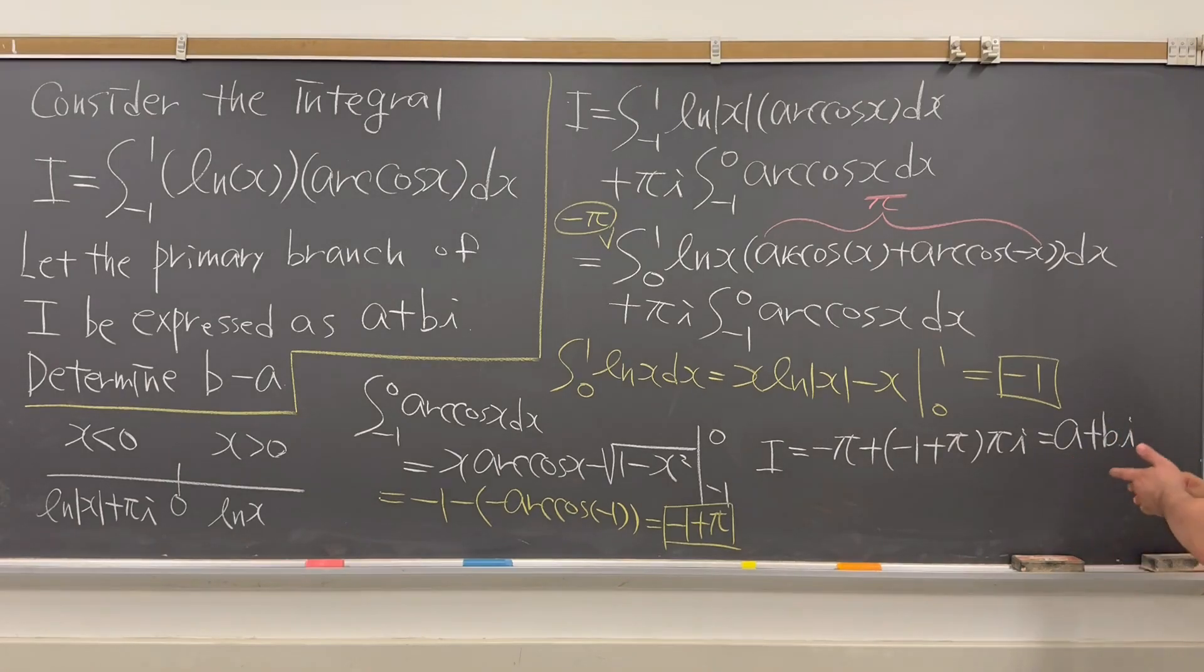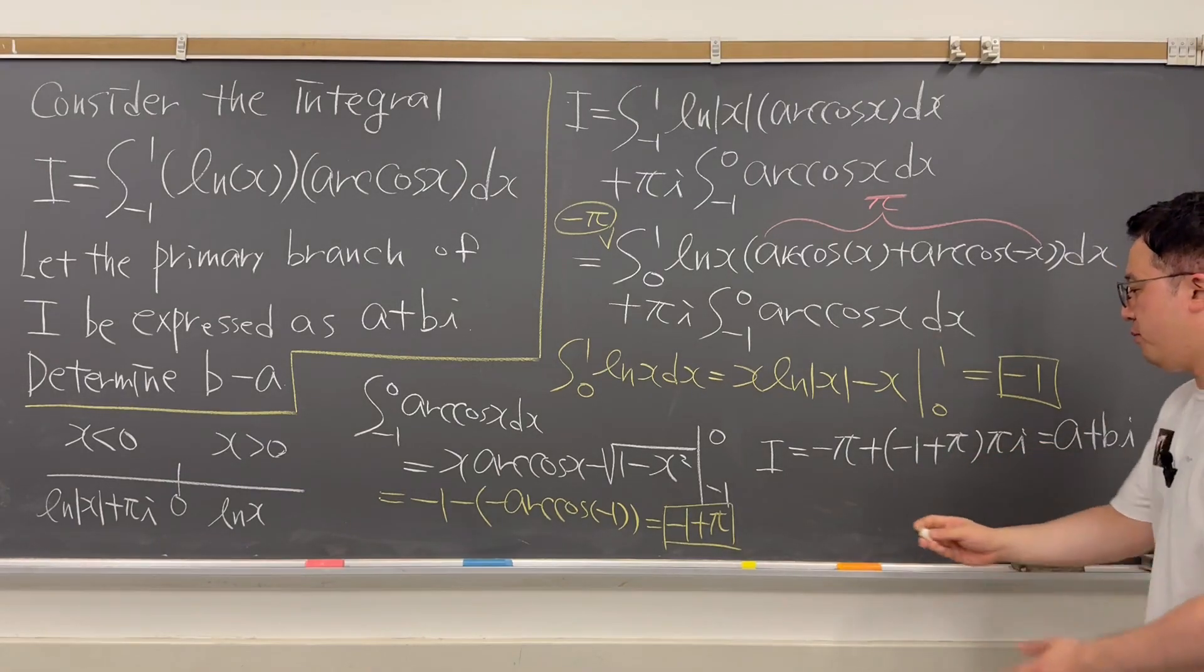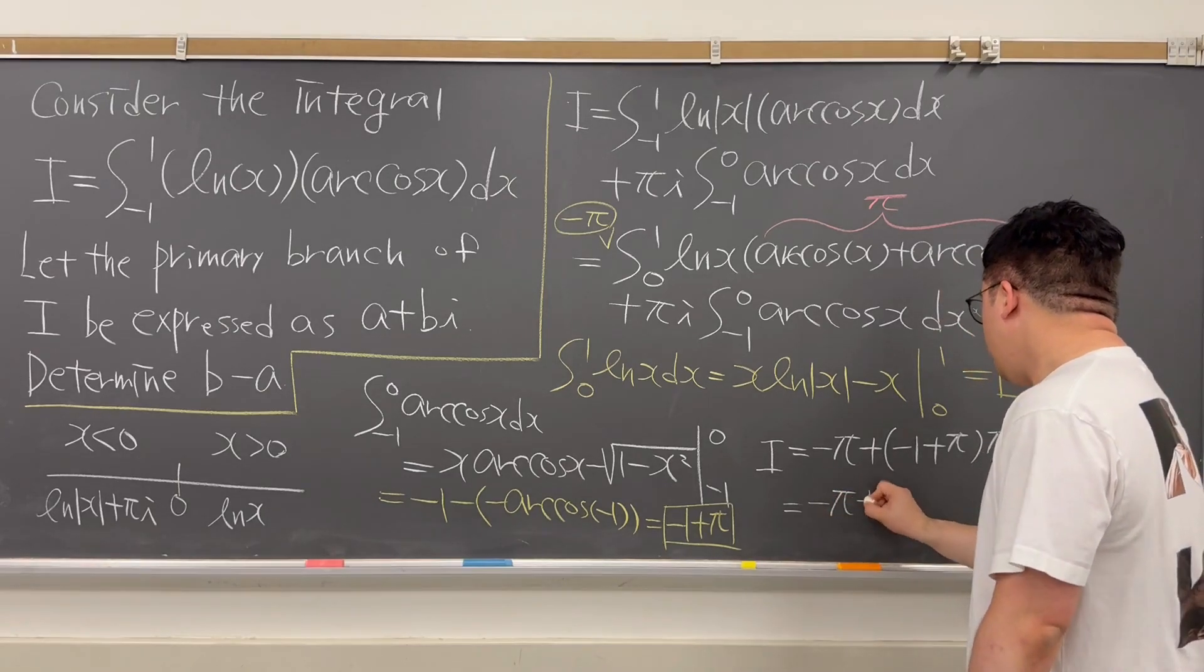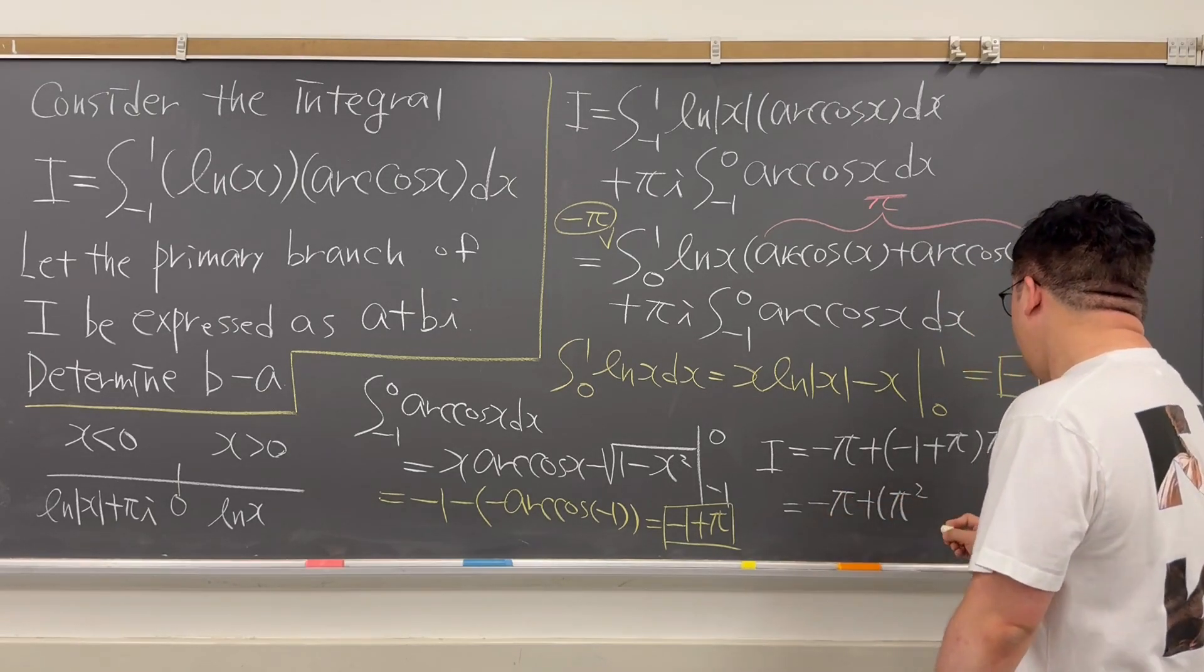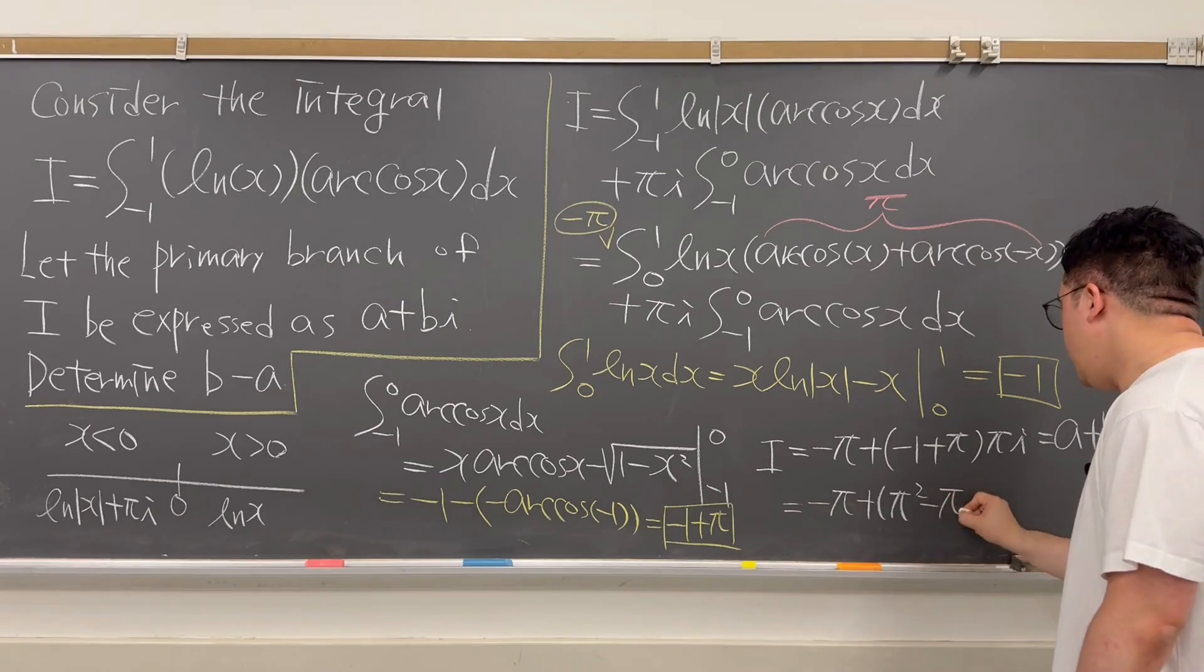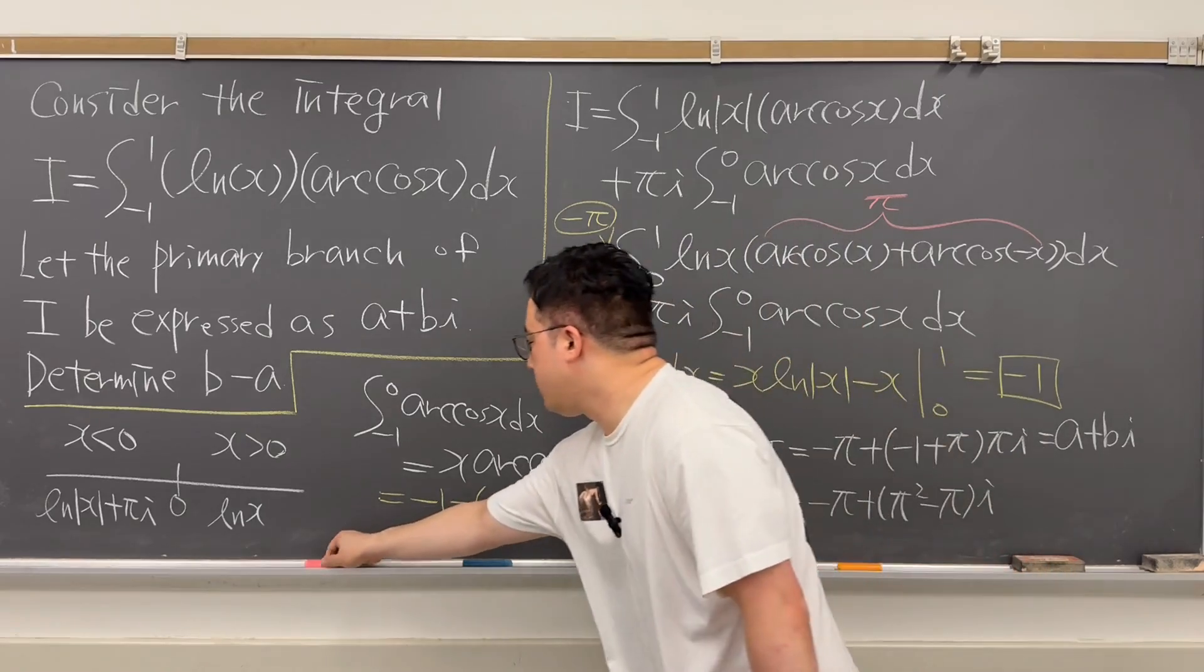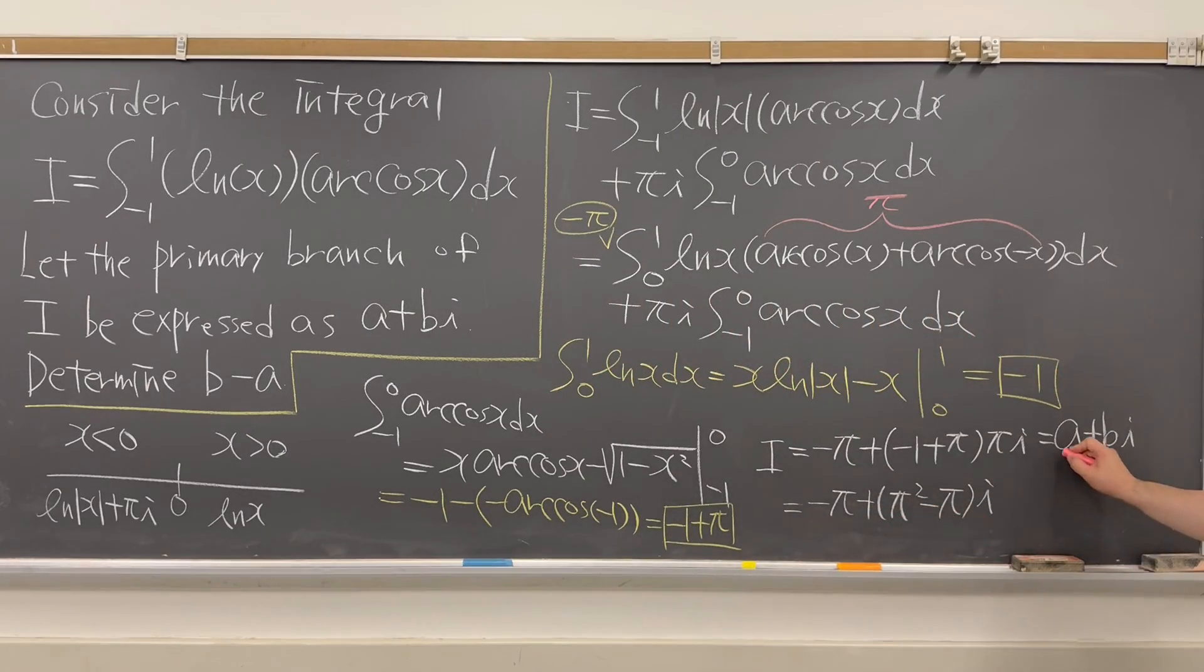So that's why we need to put this π back into your parenthesis, and this has to be the same as negative π, plus now π squared minus π times i. So that's why we can represent your a as negative π, and then your b has to be now π squared minus π.